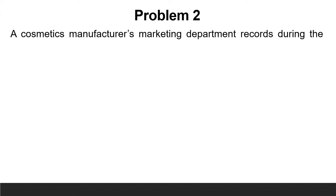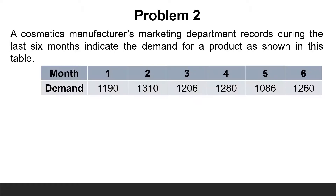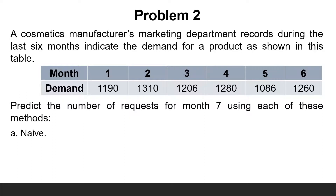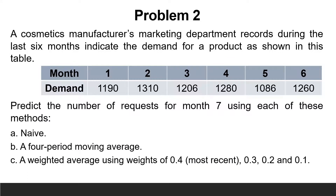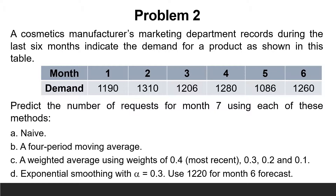Let us solve another problem. A cosmetics manufacturer's marketing department records during the last 6 months indicate the demand for a product as shown in this table. Predict the number of requests for month 7 using: naive, a 4-period moving average, a weighted average using weights of 0.4 (most recent), 0.3, 0.2, and 0.1, and exponential smoothing with alpha equals 0.3, using 1220 for the month 6 forecast.